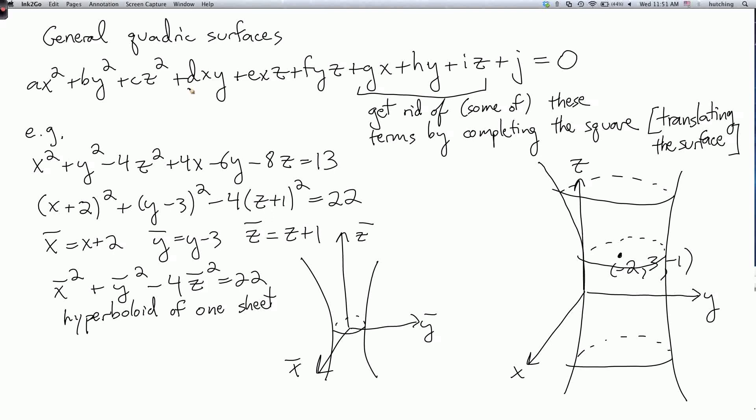Now if you further have terms of the form xy, xz, and yz, then these correspond to rotation of the surface. So you can get rid of those terms by making a change of coordinates which rotates the surface. You've got a rotated version.